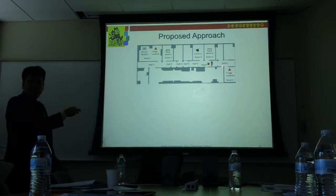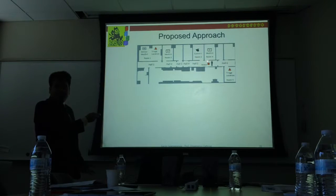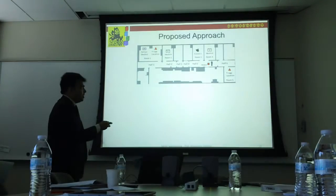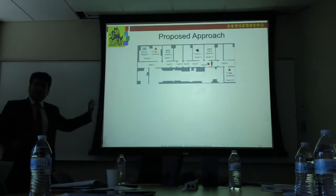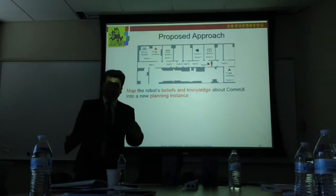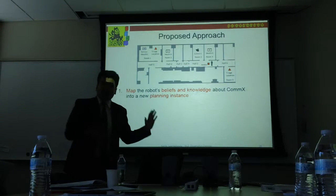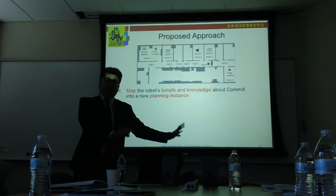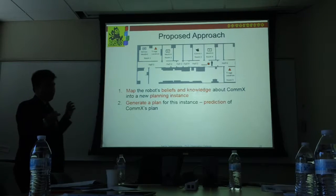Gordon is communicating with the robot, and Commander X is in room 3. Gordon tells the robot that Commander X has a goal of performing triage in room 1, and also tells the robot to pick up a med kit and take it to another location. When the robot has knowledge about Commander X's intentions from Gordon, it maps that knowledge into a new planning instance — simulating Commander X's planning process at a higher level so the robot can predict what Commander X might do.